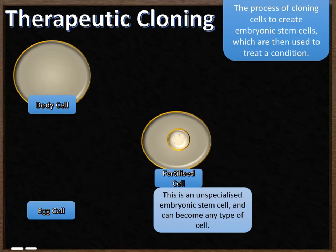And that's an unspecialized embryonic stem cell — it can become any type of cell at all, which is very useful in the treatment of diseases. You allow that cell to replicate up until the eight-cell stage, when it will start to specialize. If you take the cells before they reach that stage, when you've got eight cells, you can then use them in the treatment of any condition that requires some new cells.